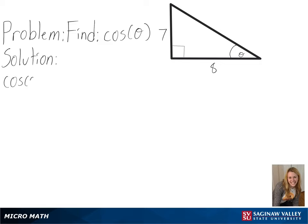Our problem is to find cosine of theta. To find our cosine value at this angle, we will need to find the length of the adjacent side over the length of the hypotenuse.